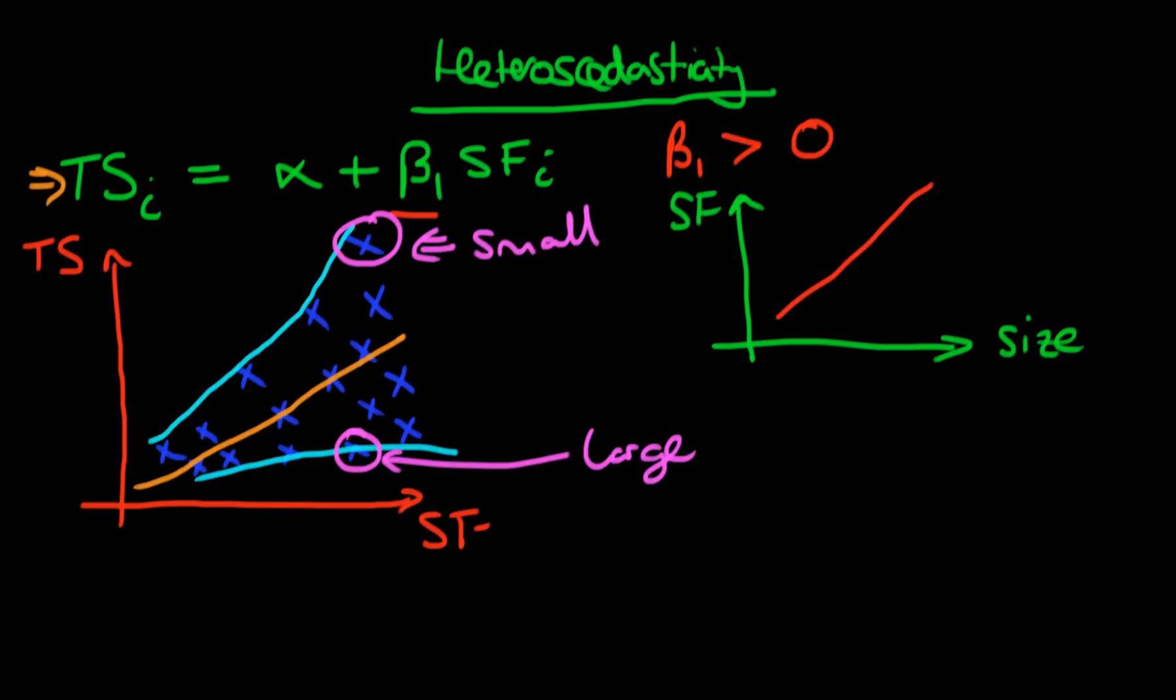So if we were to include our important variable, school size, in our particular model, so now we have an amended model which is test score of school i equals alpha plus beta 1 times school funding of school i plus beta 2 times the size of school i. So this is our amended model.